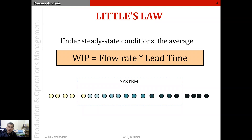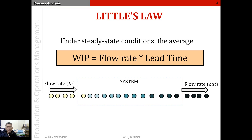Entities flow into a system, remain in the system for some time, and then flow out. In steady state, the average flow rate into the system equals the average flow rate out. The time spent by an entity in the system is called its lead time — the time between the entity entering and leaving the system. The number of entities in the system at any point in time is called the WIP.